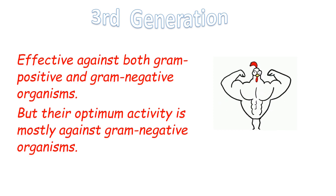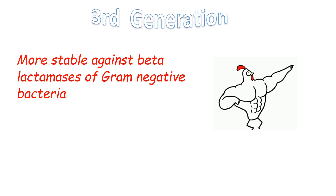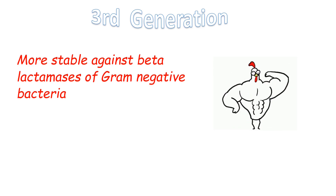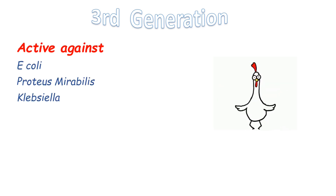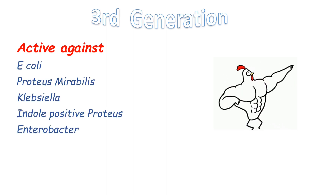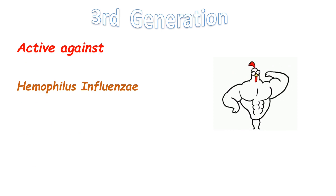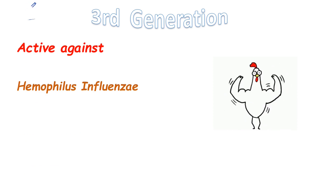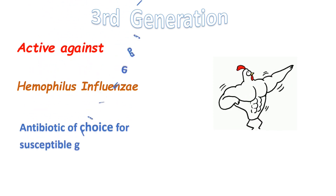Now let's talk about the spectrum of activity of the third generation Cephalosporins. They are more stable against the common beta-lactamases of gram-negative bacilli, and are highly active against E. coli, Proteus mirabilis, indole-positive Proteus, Klebsiella, Enterobacter, Serratia, Citrobacter, and Neisseria. They are also active against Haemophilus influenzae and are the therapy of choice for gram-negative meningitis due to susceptible enterobacteria.